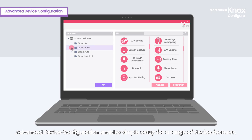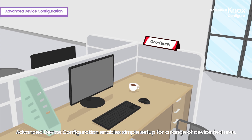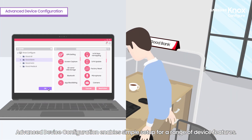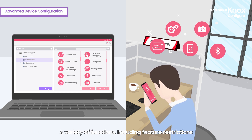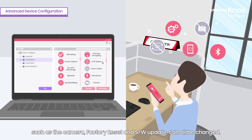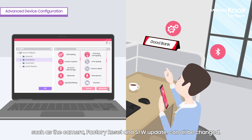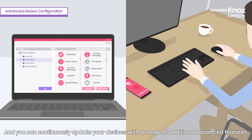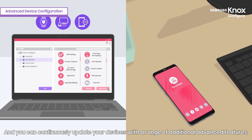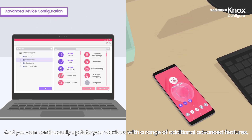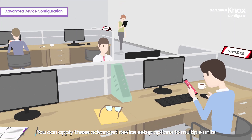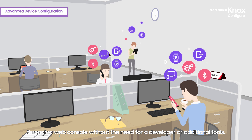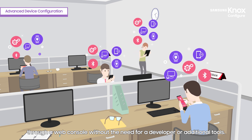Advanced device configuration enables simple setup for a range of device features. A variety of functions, including feature restrictions such as the camera, factory reset, and software update, can all be changed. You can continuously update your devices with a range of additional advanced features. You can apply these advanced device setup options to multiple units through a web console, without the need for a developer or additional tools.